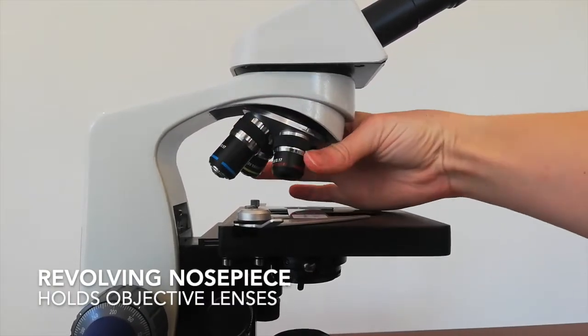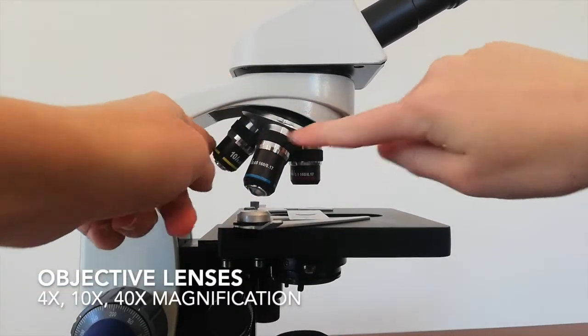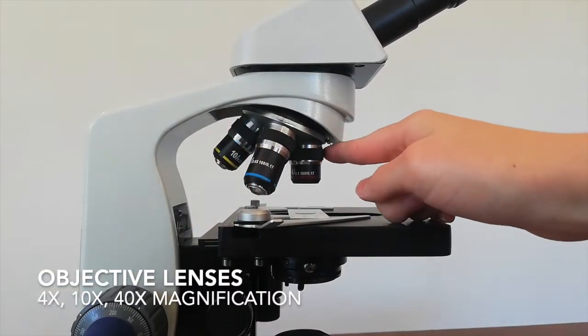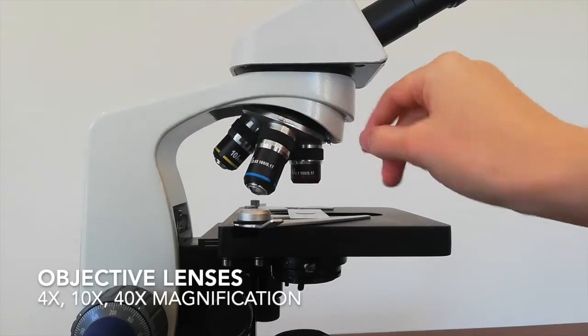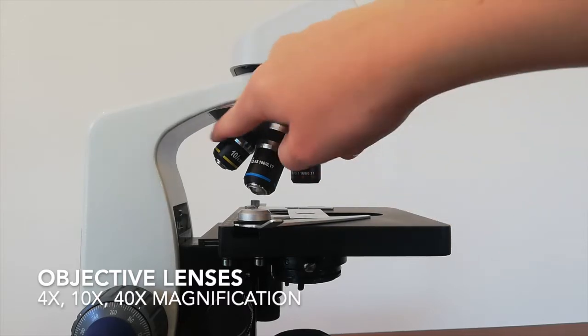The revolving nose piece actually moves around, and these things coming off of it are called objective lenses. You can probably see the little numbers on them: 4, 10, and 40.